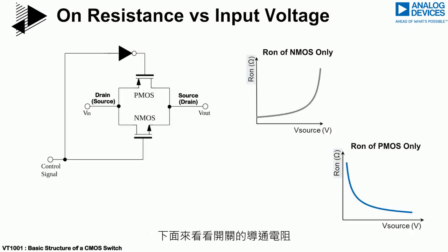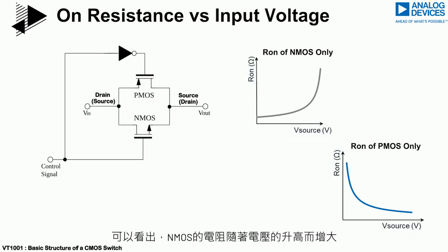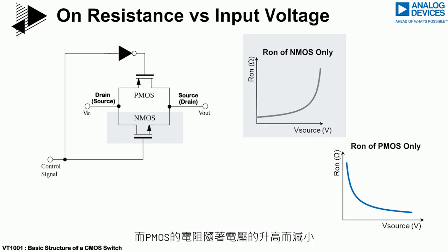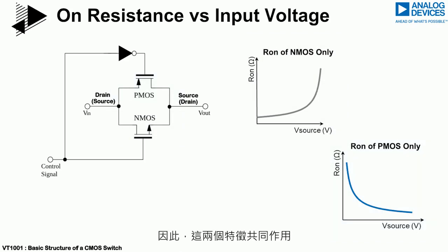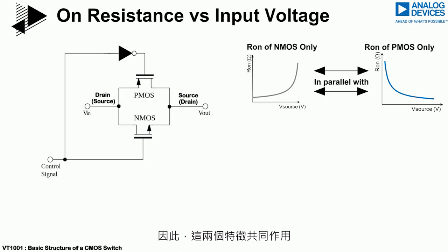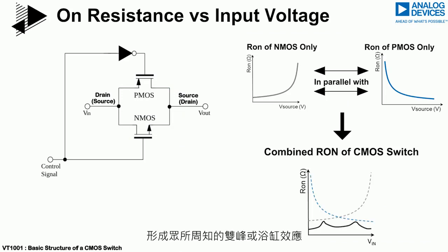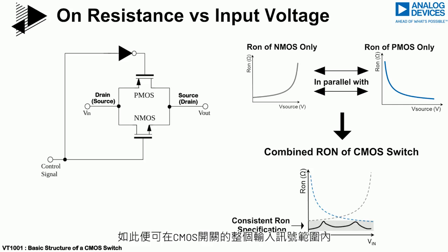If we now look at the on resistance of the switch, which is plotted against the applied input voltage, it can be seen that the resistance of NMOS increases with positive voltage and the resistance of PMOS increases with negative voltage. Thus, the parallel combination of these two characteristics results in the well-known twin peak or bathtub characteristic. This results in a relatively consistent on resistance specification over the full input signal range of the CMOS switch.